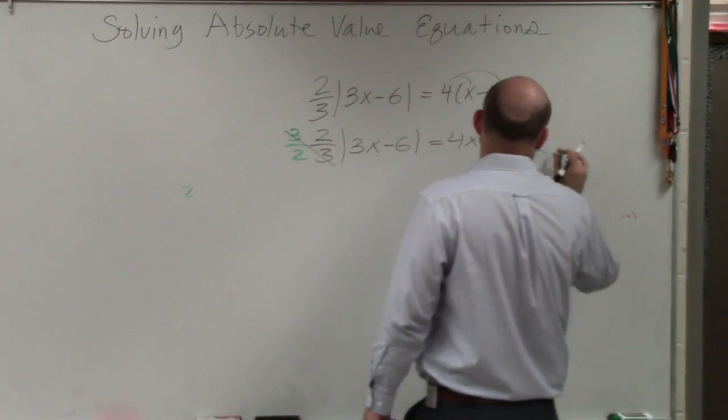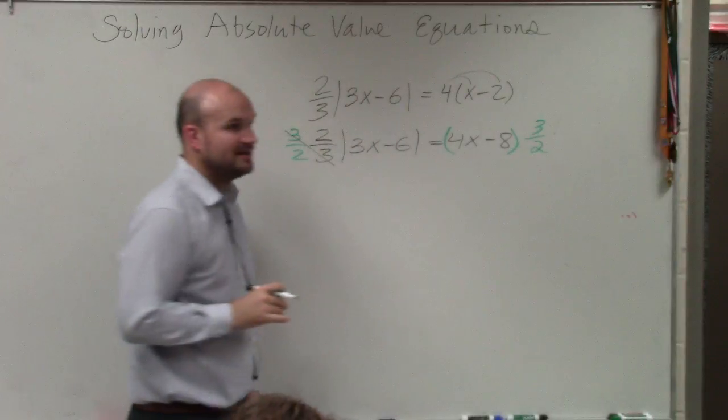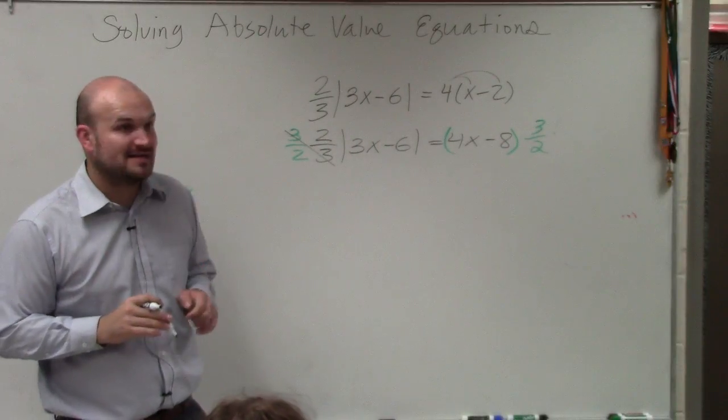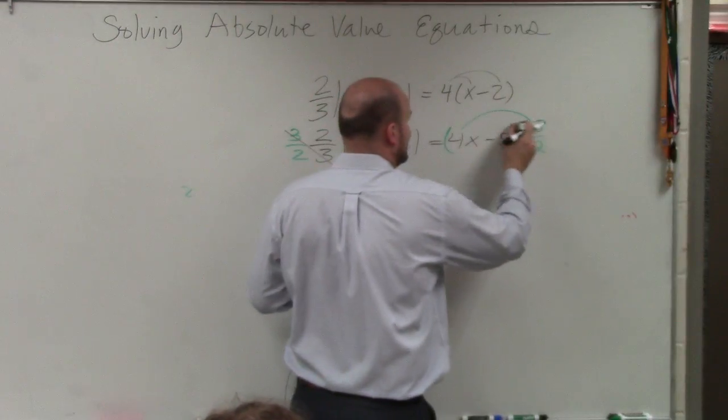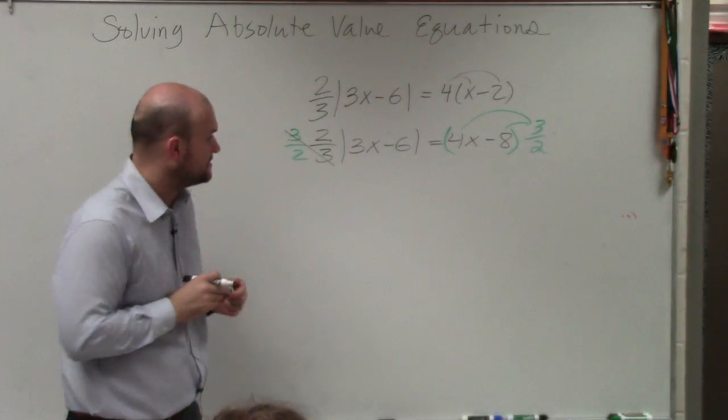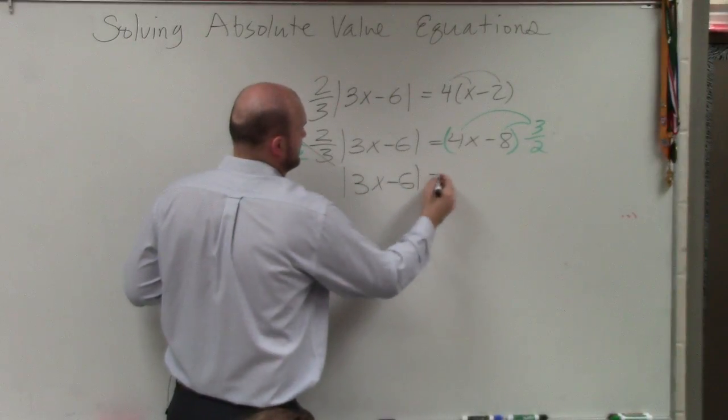So that goes out. Then we have 3 halves. Now, remember, this is a quantity. So you've got to use parentheses. You're not just multiplying the 3 halves times one of the numbers. You've got to make sure you multiply the quantity times 3 halves. So we're left with 3x minus 6 equals...